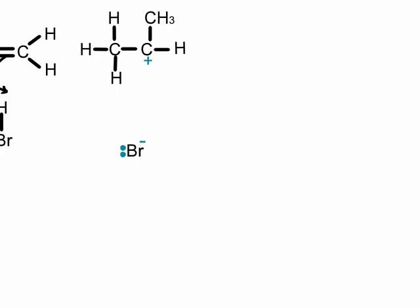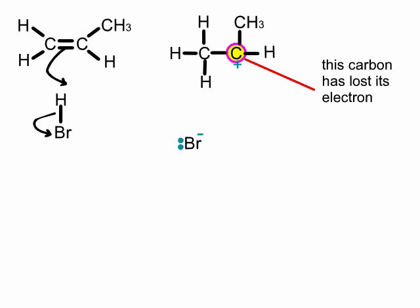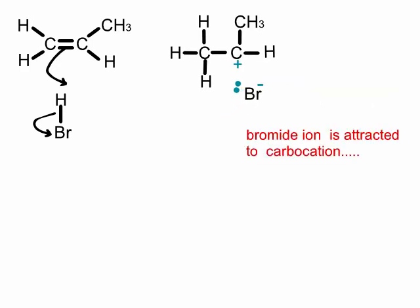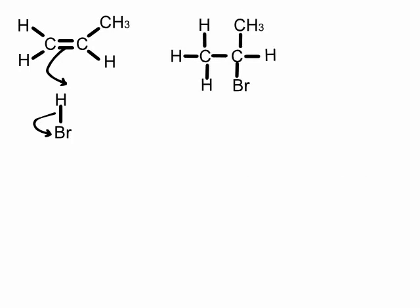Here's the intermediate — it's referred to as a secondary carbocation. Secondary because the carbon with the positive charge has two alkyl groups attached to it. The bromide ion then comes in, and the lone pair — which had been the bond between H and Br in hydrogen bromide — is now used to form a bond with the positively charged carbon. The positive charge is no longer on the carbon because, in gaining a share in that pair of electrons, it has effectively gained an electron and lost its positive charge.